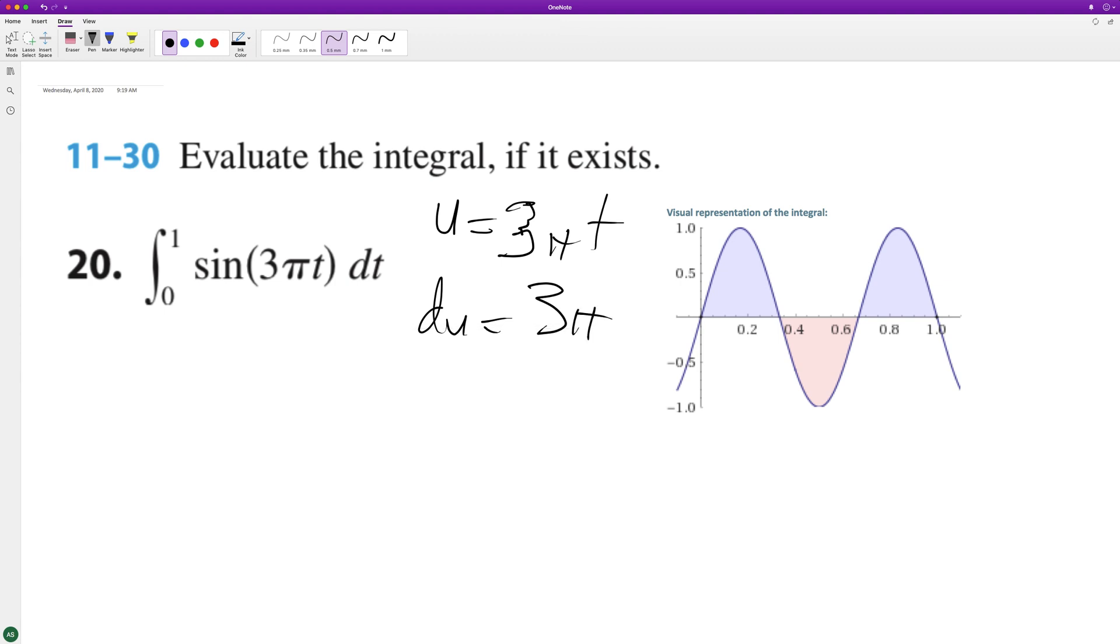And what we're missing here to get du equal to dt is 1 divided by 3 pi. All right, so let's go ahead and integrate this.